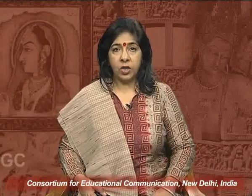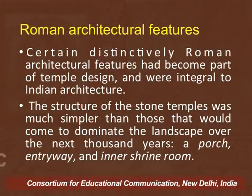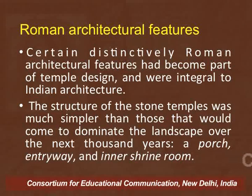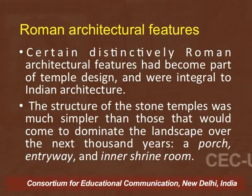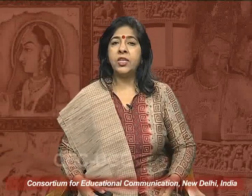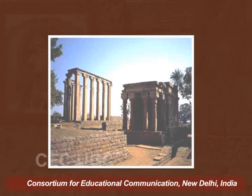The structure of temples that started developing during the Gupta period shows some influence of Roman architectural features, which gradually became part of the overall temple design and integral to Indian architectural styles. The structure of stone temples was much simpler during this period than what would evolve over the next thousand years. Important features like the porch, entryway, and inner shrine room all became far more complicated and bigger as time went on. This is an example of the structural forms that came to be identified as temple architecture.